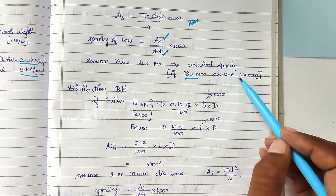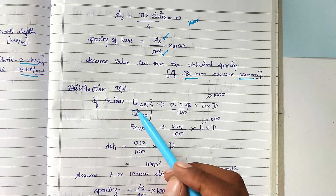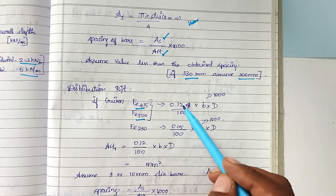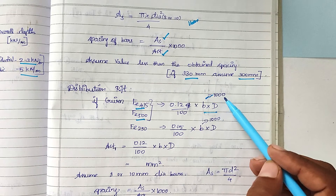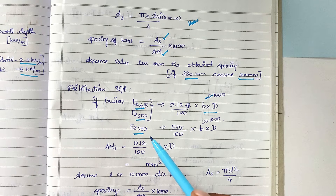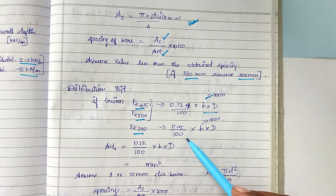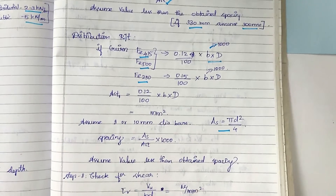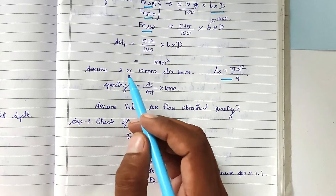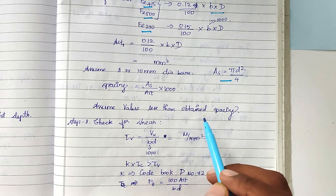For example, if the calculated spacing is 330 mm, we assume 300 mm; if it is 420 mm, we assume 400 mm. For distribution reinforcement, if the steel is Fe 415 or Fe 500, the minimum area is 0.12/100 × b × d, with b taken as 1000 mm. If the steel is Fe 250, the percentage is 0.15/100 × b × d. We assume 8 mm or 10 mm diameter bars, find the one-bar area, and calculate spacing using the same formula as for main reinforcement.